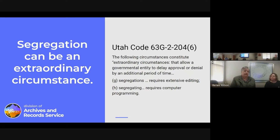Even though section 203 doesn't specifically mention time for segregation or redaction, I think that would be included in the costs for compiling and administrative costs for complying with the request. Segregation is one of two extraordinary circumstances listed in GRAMA. When a governmental entity receives a records request, they have 10 business days to respond. One of the responses can be that due to extraordinary circumstances, it will take more than 10 days.